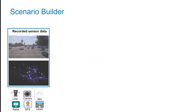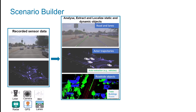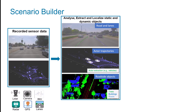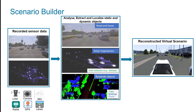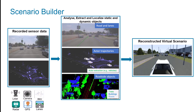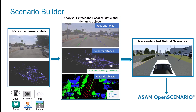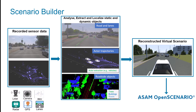Using data from sensors like lidar, camera, IMU, GPS, and radar, you can analyze and extract crucial information such as roads, lanes, and static objects. With reconstructed active trajectories and roadside objects, you can generate scenarios that mimic real-world conditions, which can also be exported to ASAM OpenSCENARIO formats.